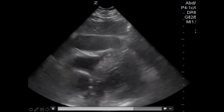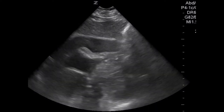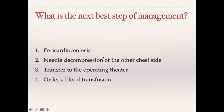The problem with clotted blood is that it's not easy to suck out with a needle. So often these patients need to go to the operating room to get a pericardial window, or just have the whole pericardium removed. The sonographic diagnosis is pericardial effusion with tamponade. Next best step: somewhat depends on how quickly you can get them to the operating theater, but if you can't get there right away, do pericardiocentesis, then get them to the OR for the window or pericardium removal.